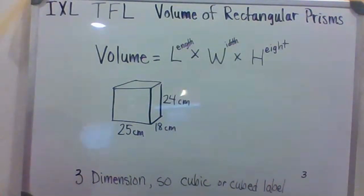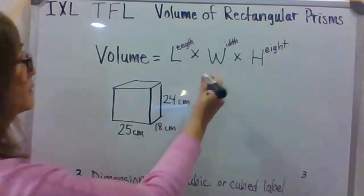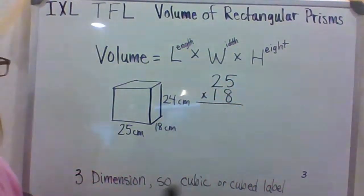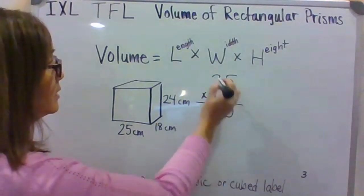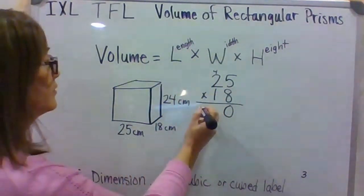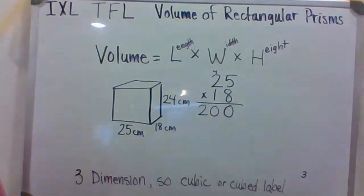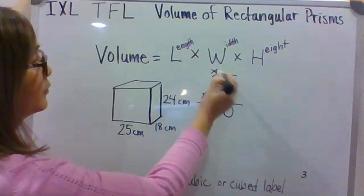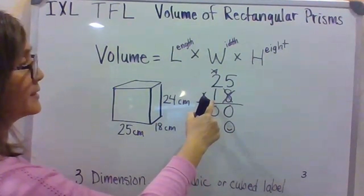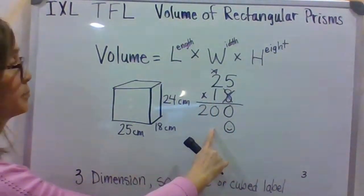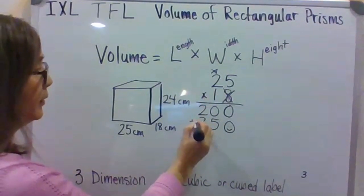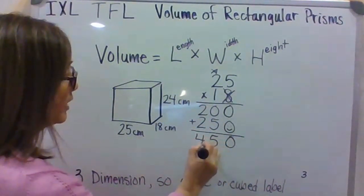So, I will model this out as a review for those that need it. So, I'm going to take my length times my width. So, 25 times 18. I have to make sure I keep everything lined up nice and neat, right? 8 times 5 is 40. 8 times 2 is 16. 16 plus 4 more? That's right. It's 20. Then, I know I'm finished with the 8. So, now I'm going to put in my space holder to represent that I'm now in the tens place value. 1 times 5 is 5. 1 times 2 is 2. I would add up these partial products and I would get 450.